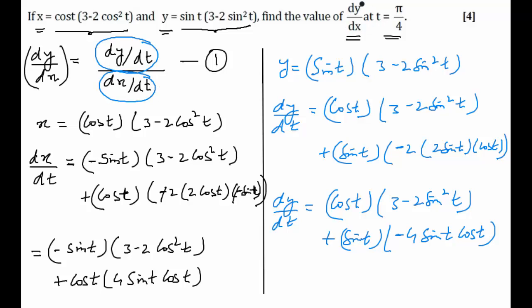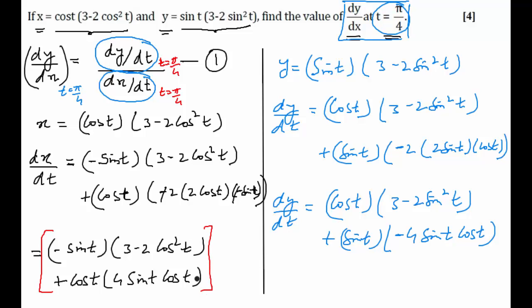Now we have separately the values of dy/dt and dx/dt. The question is to calculate dy/dx at t equal to π/4. I can calculate dy/dt at t equal to π/4 and dx/dt at t equal to π/4, and then take the ratio. These expressions might look big, but on substituting π/4, each will give a very simple result, the ratio of which gives my answer.